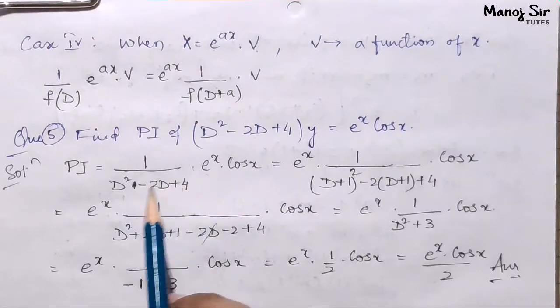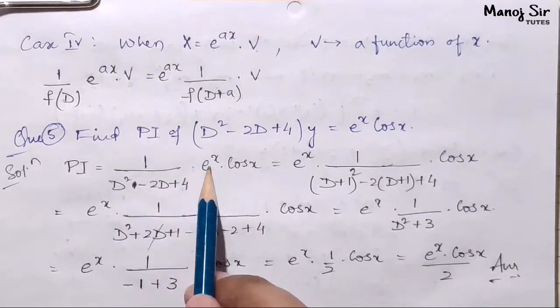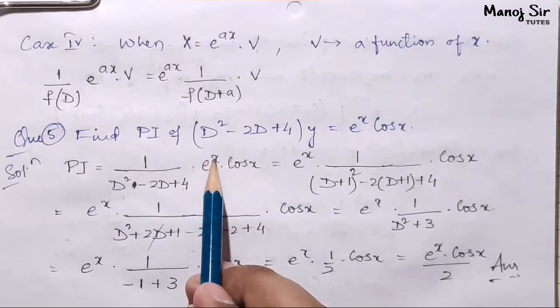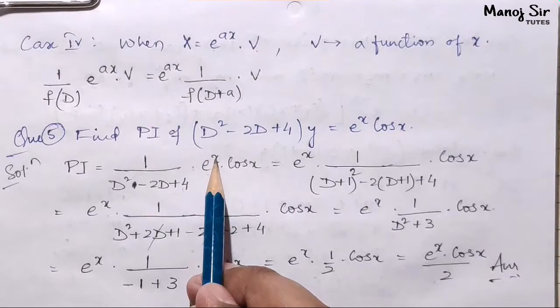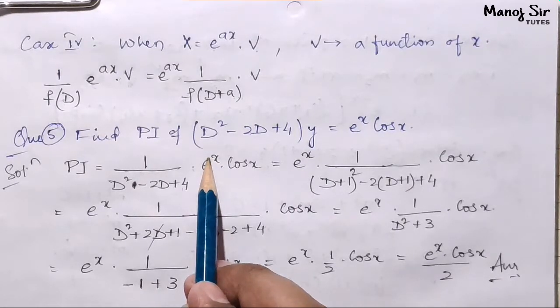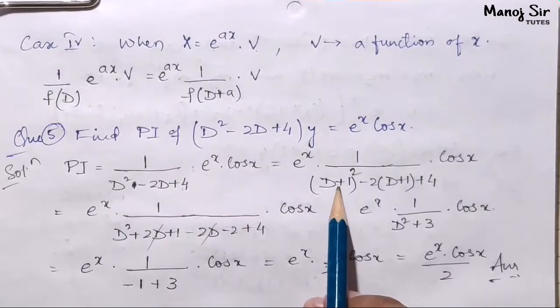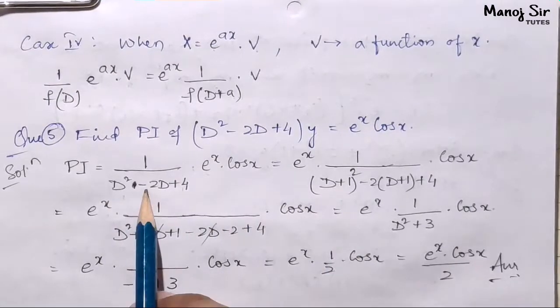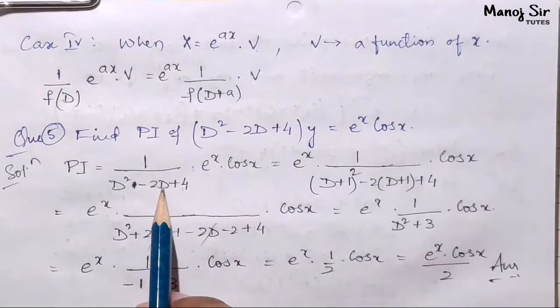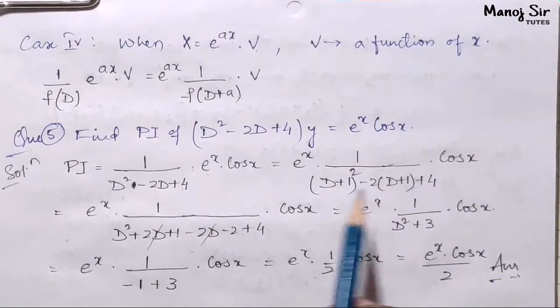In place of D, we write D plus 1: (D+1)² - 2(D+1) + 4. The constant 4 remains as is. Whatever value we get, we then solve for cos x.